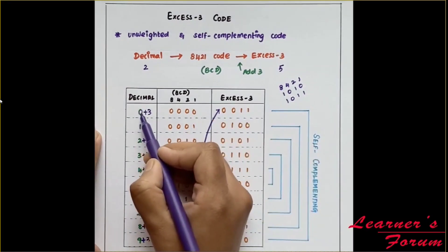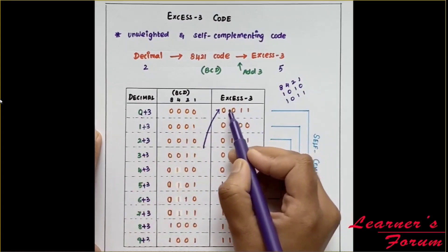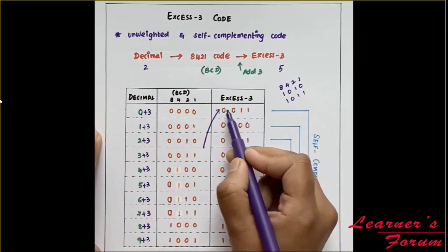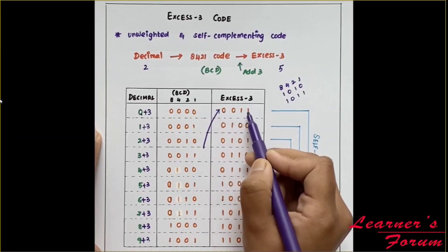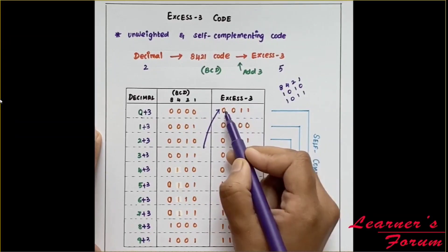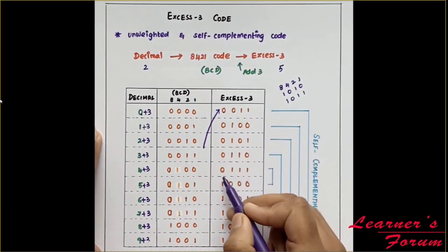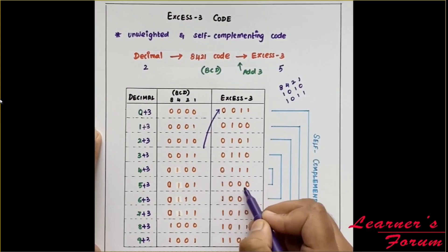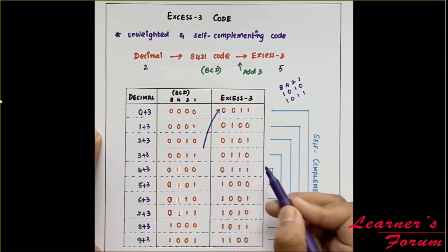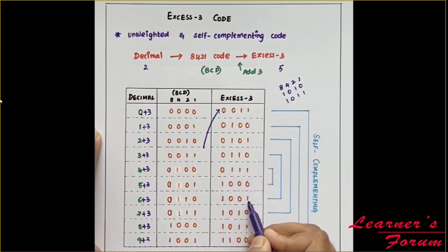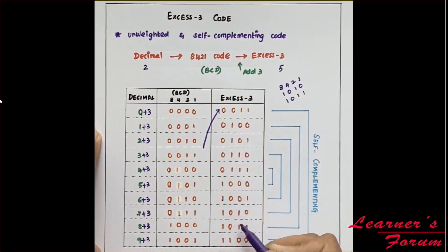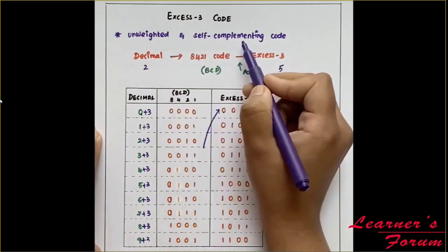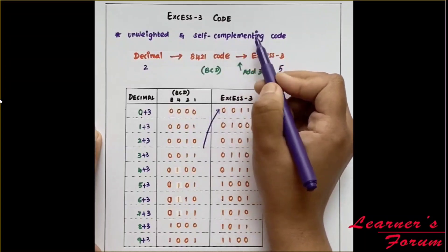Looking at the XS3 representation, we can verify it is self-complementing. For 0, the XS3 code is 0011. Taking 1's complement gives 1100, which is the XS3 code for 9. Similarly, taking 1's complement of the code for 1 gives the code for 8, and so on for other pairs as indicated. This is why XS3 is called a self-complementing code — taking the complement of one value gives its decimal complement pair.